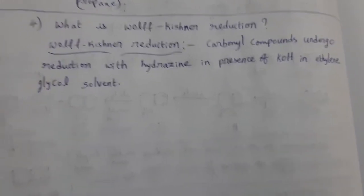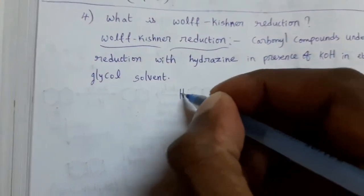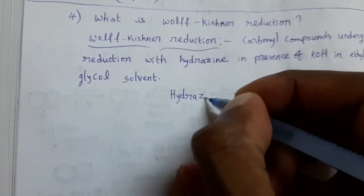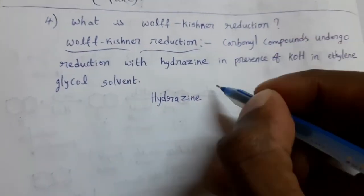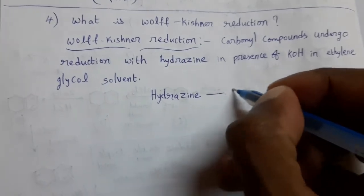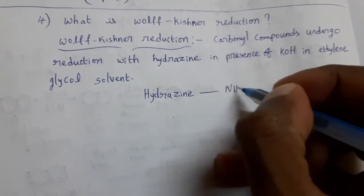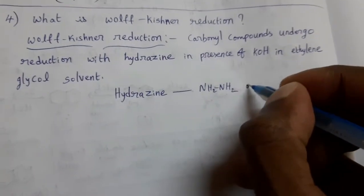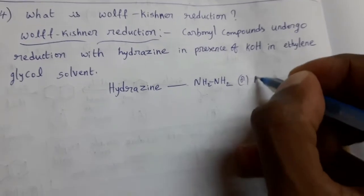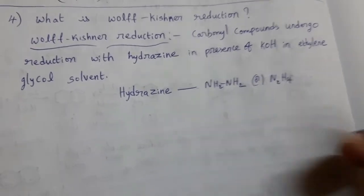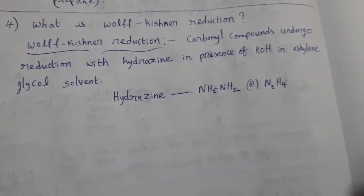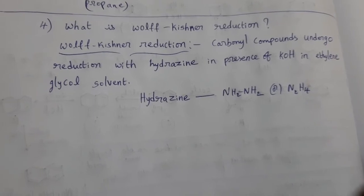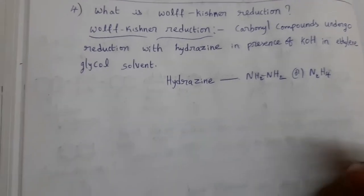What is the formula of hydrazine? Its formula is NH2NH2, or simply N2H4. This is hydrazine. It is used as a reducing agent in this reaction.